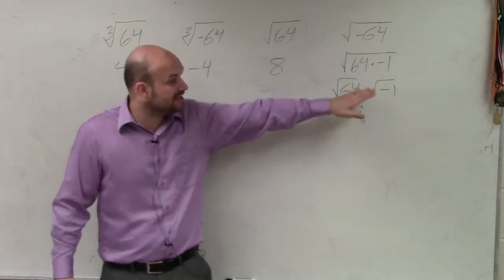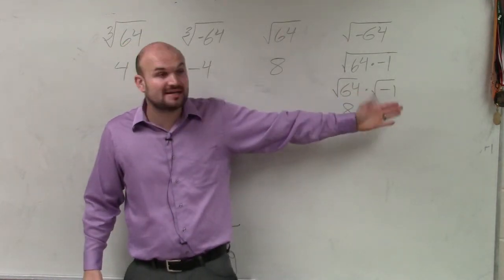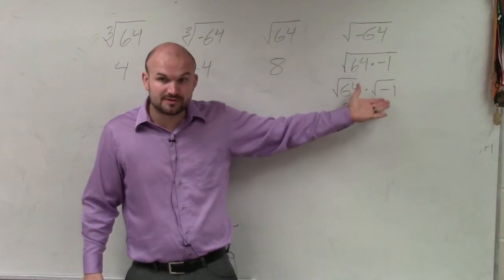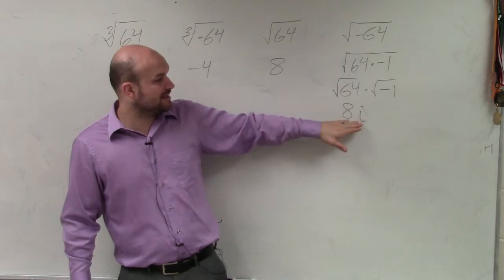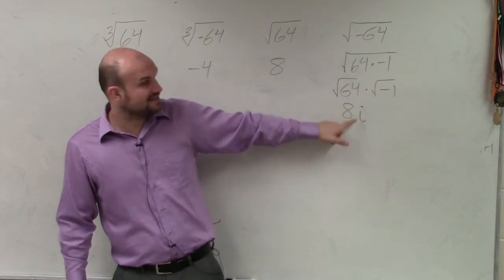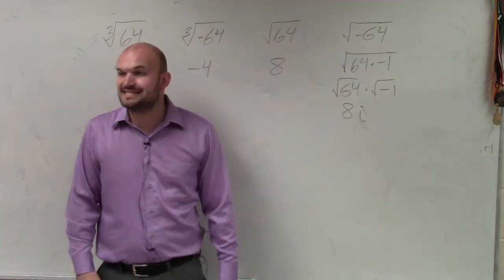That represents an imaginary unit. Because it's impossible to multiply a number by itself to get a negative number for an even root, right? So our number system is now going to include the imaginary number system. So this answer, simplified, could just be 8i.